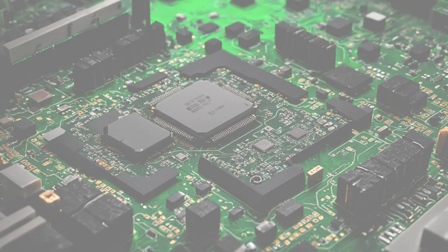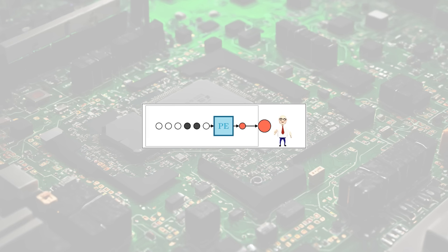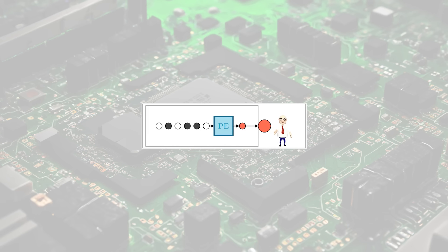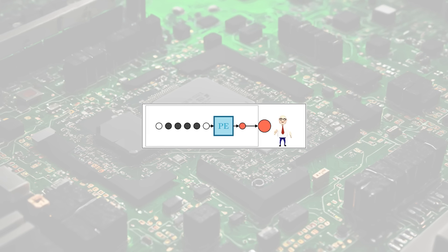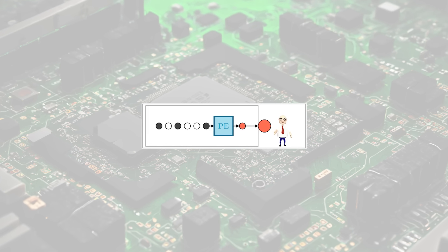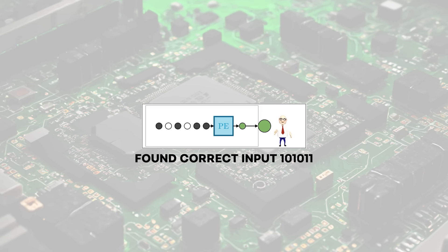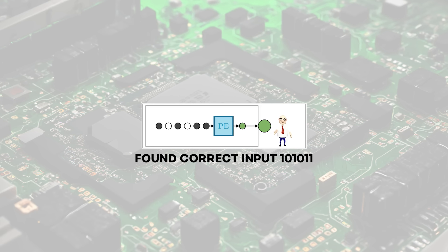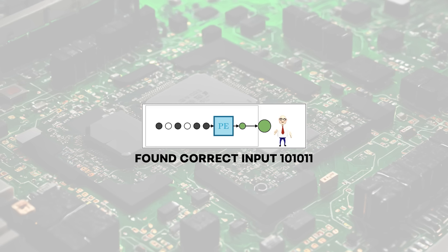On a normal CPU you need to try out all the 2 to the n possibilities one after the other. The input is represented by the circles on the left. The processing element tries this input and flags a pass in green or a fail in red. Finally this output is signaled to the observer.